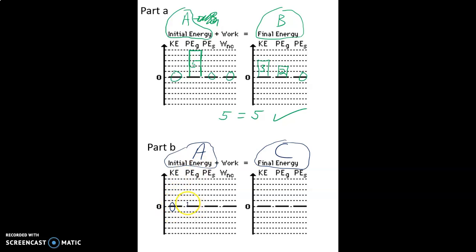It starts from rest and you didn't have to do five bars worth of gravitational potential energy up here, but if you did do five bars up here then you should be doing five down here as well. No spring energy.